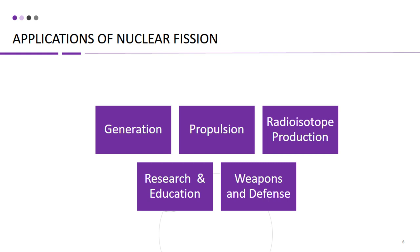Nuclear reactors are used to produce radioisotopes by irradiating target materials with neutrons, which induces nuclear reactions that result in the production of specific radioisotopes. Nuclear fission is also used in research and education to study the fundamental properties of nuclear reactions and to train students in nuclear physics and engineering. Research reactors are specialized nuclear reactors used for a wide range of scientific experiments, such as investigating nuclear structure, studying radiation effects, and conducting materials research. These reactors are also used for educational and training purposes to prepare students and researchers for careers in the nuclear field.